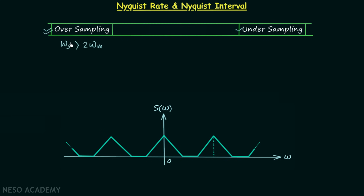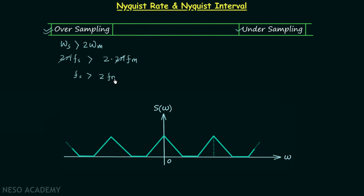We know ΩS = 2π/Ts, or equivalently 2π·Fs. And twice of ΩM equals 2·2π·Fm. From here we get 2π·Fs > 2·2π·Fm, and the 2π terms cancel out, giving us Fs > 2·Fm. So this condition is allowed and in this condition there will be no overlapping.